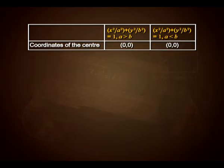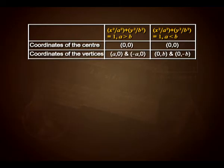The coordinates of the center are (0, 0) in both cases. For the ellipse x² upon a² plus y² upon b² equals 1 where a is greater than b, the coordinates of vertices are (a, 0) and (minus a, 0). For the case where a is less than b, the coordinates of vertices are (0, b) and (0, minus b). The coordinates of foci for a greater than b are (ae, 0) and (minus ae, 0), and for a less than b are (0, be) and (0, minus be).